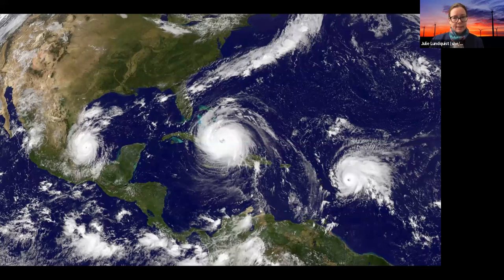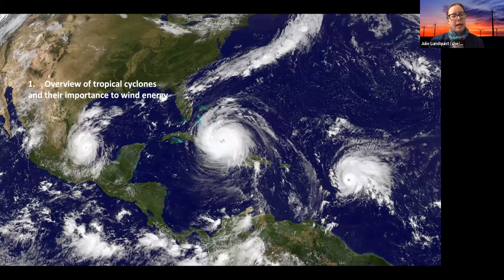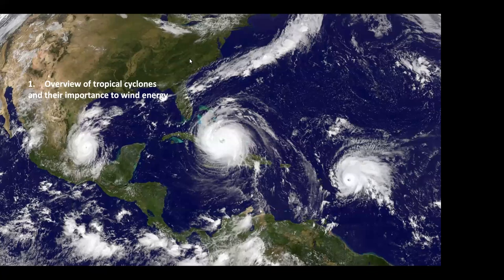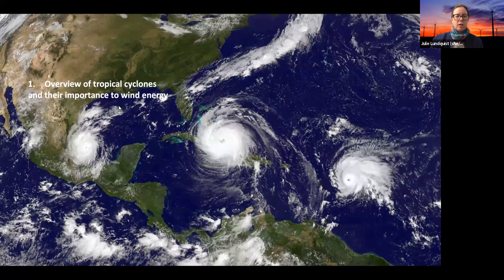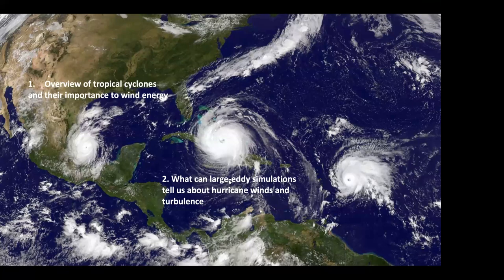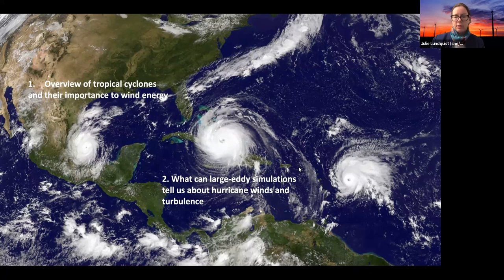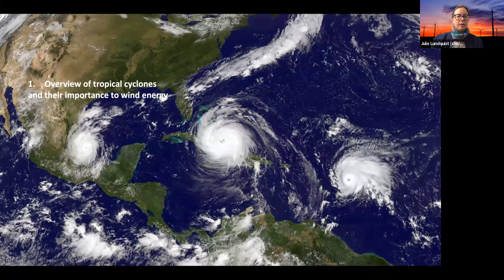A few weeks after that image, Hurricane Maria would bring devastation and a humanitarian crisis to Puerto Rico. When we think about the complex and beautiful fluid dynamics of tropical cyclones, it's important to remember how potent and dangerous they can be. Today I'll cover three aspects: first, an overview of tropical cyclones and why they matter for wind energy; second, what large eddy simulations can tell us about hurricane winds and turbulence; and third, the larger context of hurricane risk, highlighting work from colleagues at Clemson University in the OWEN project.